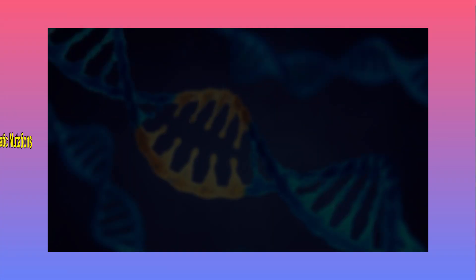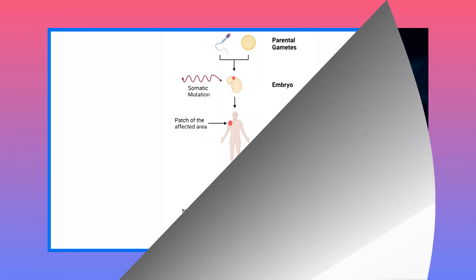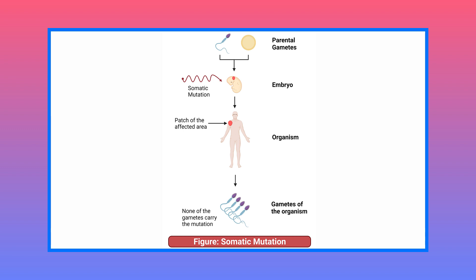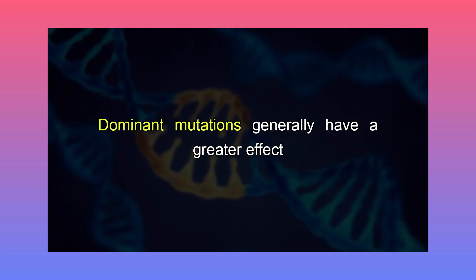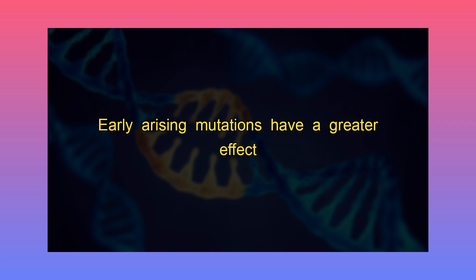There are various schemes for classification of mutations. Depending upon the type of cell involved, there can be somatic mutations. Somatic mutations are in the somatic tissues of the body and are not transmitted to the progeny. The extent of the phenotypic effect depends upon whether the mutation is dominant or recessive — dominant mutations generally have a greater effect. The extent of the phenotypic effect also depends upon whether it occurs early or late in development, as early arising mutations have a greater effect.